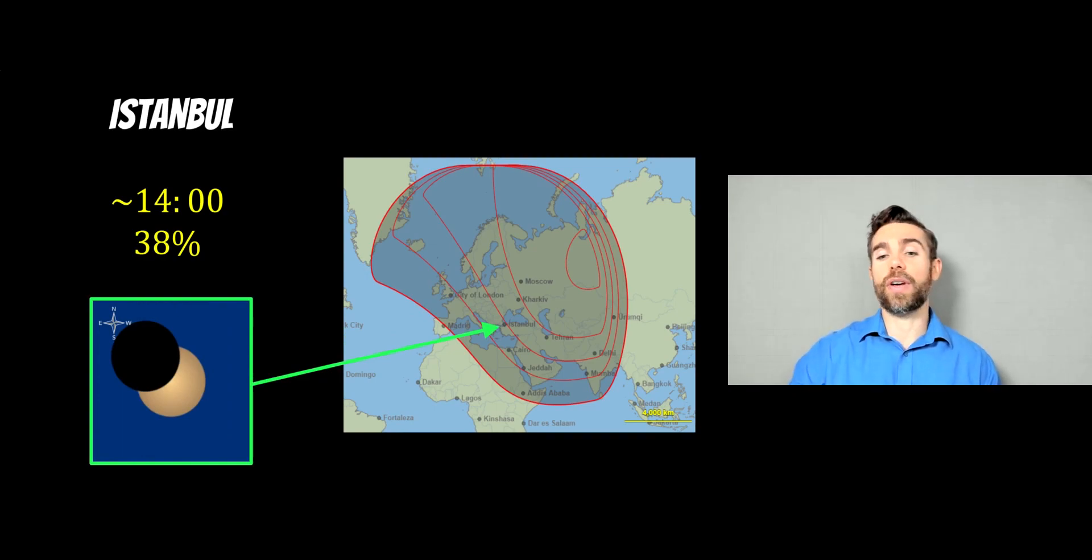If you go a bit further east towards Istanbul, which is kind of in the middle, really, then you're going to get almost 40 percent of the sun covered by the moon as it passes in front. It'll happen around two o'clock in the afternoon.